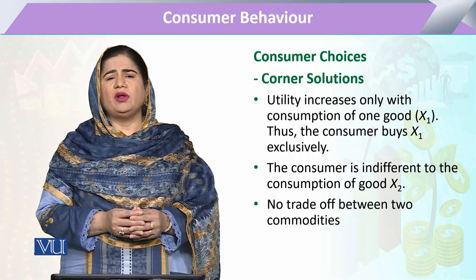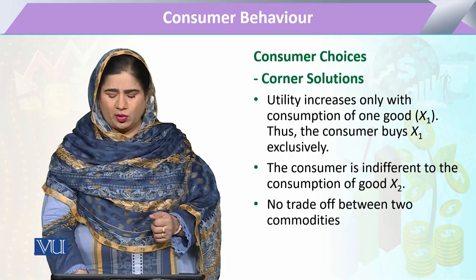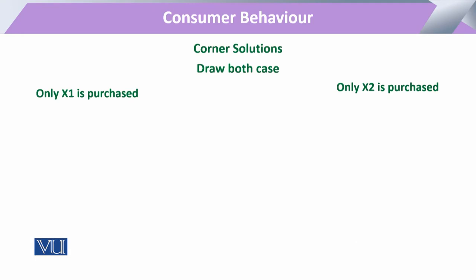In any type of decision, he will prefer to have only that particular commodity. When coming to the diagram, we can draw various types of corner solutions. If the consumer has two commodities and suppose he has this budget line, and now the consumer has the preference only for X1, the consumer will have an indifference curve that will intersect the budget line only at this point of intersection where the whole budget is spent for the purchase of commodity X1.